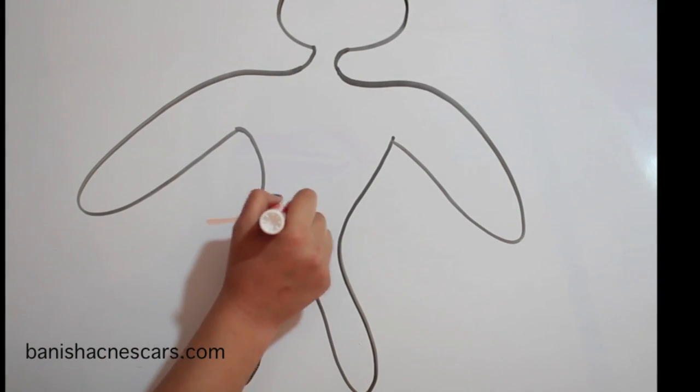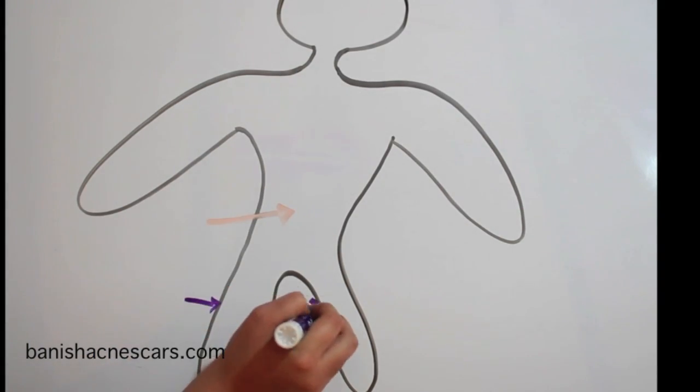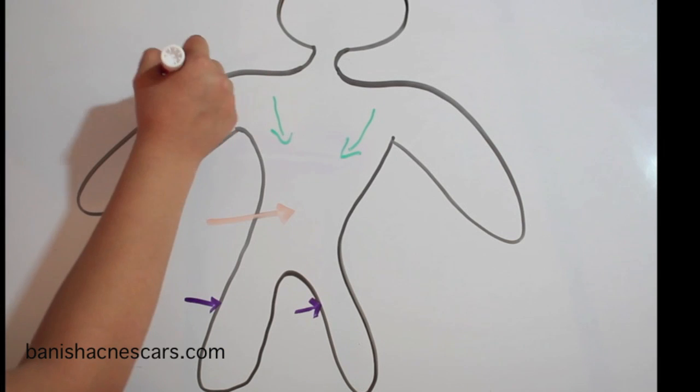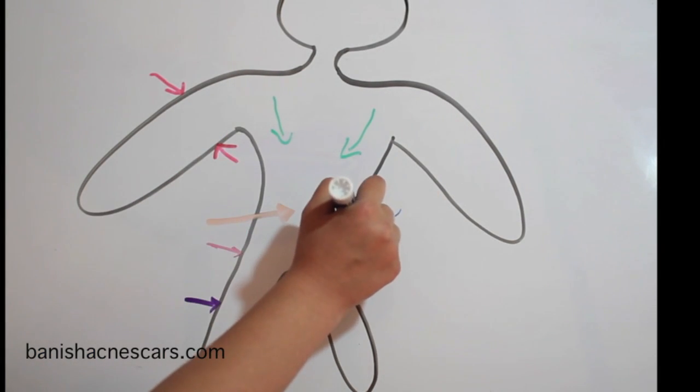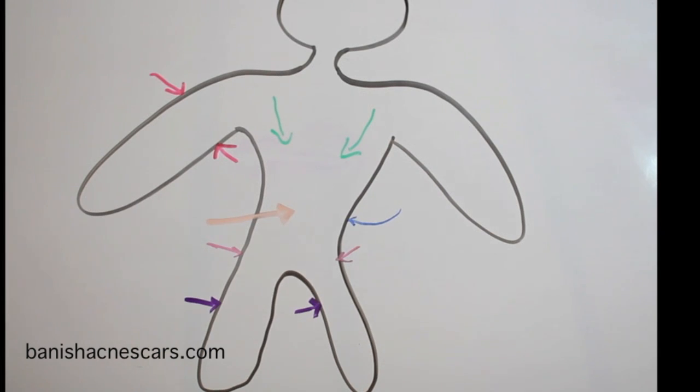They tend to show up on areas of the body that have more fat such as stomach, thighs, breasts, upper arms, buttocks and backs. Some people are also more prone to stretch marks because of genetics.